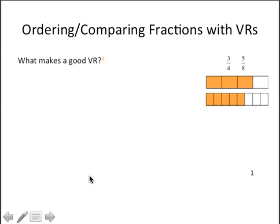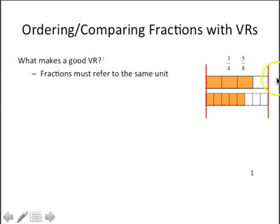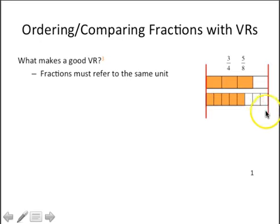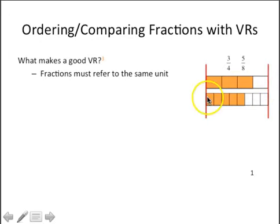A good visual representation used to compare fractions has to represent both fractions in reference to the same unit. So looking at the example on the right, both fraction representations — three-fourths on top and five-eighths below — refer to the same unit. The bars are the same size and same length; one whole is the same here as it is here. Fractions have to refer to the same unit.